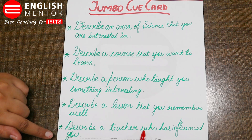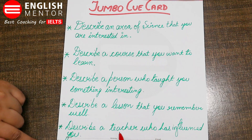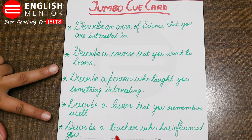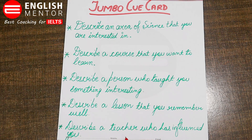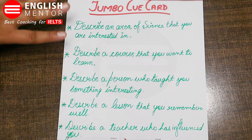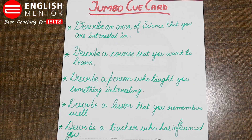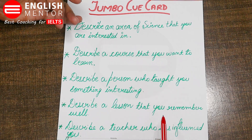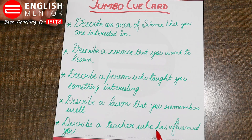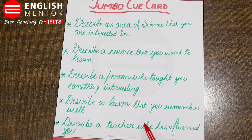Then QCard number 5: describe a teacher who has influenced you. This is similar to QCard 3 — describe a person who taught you something interesting. You can talk about your same biology teacher, botany teacher, or chemistry teacher who were your science mentors. You can stretch the same idea from QCard 1 all the way to QCard 5 and use the same idea throughout.